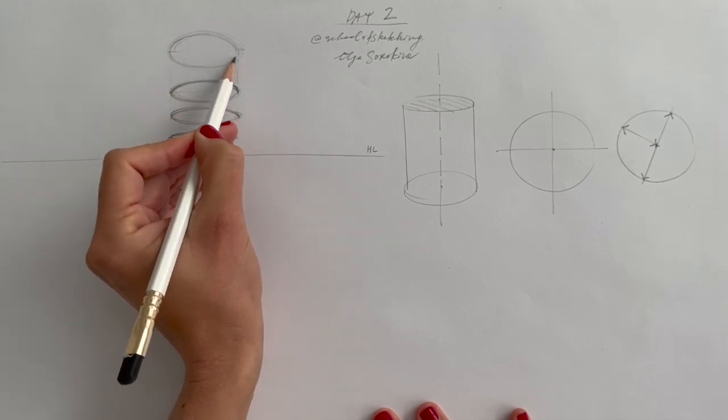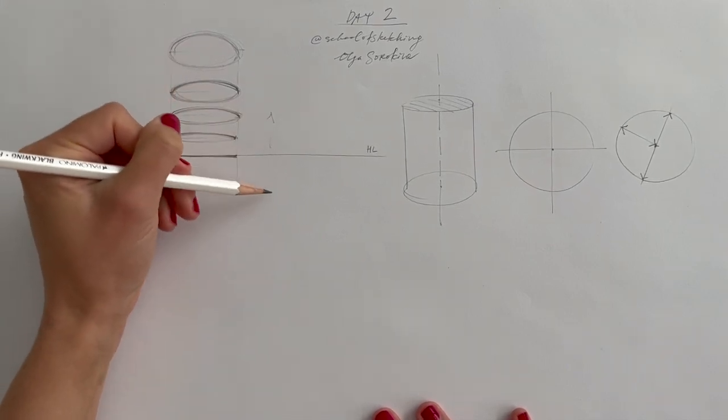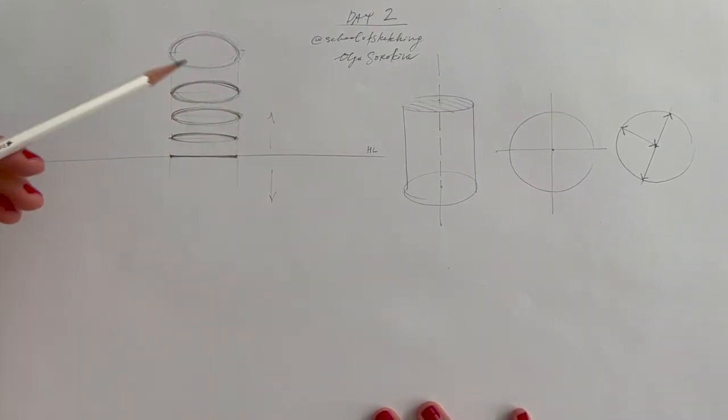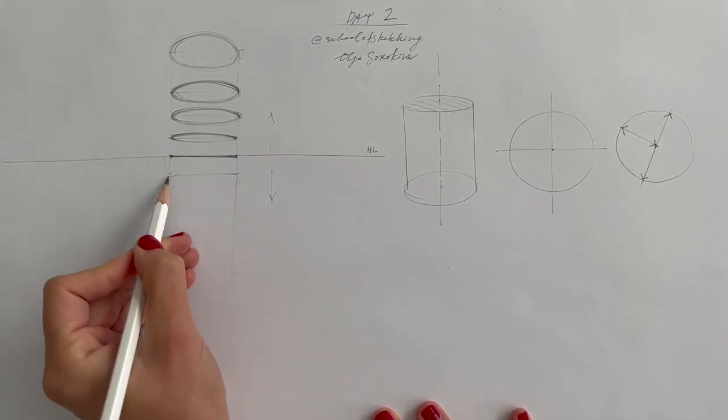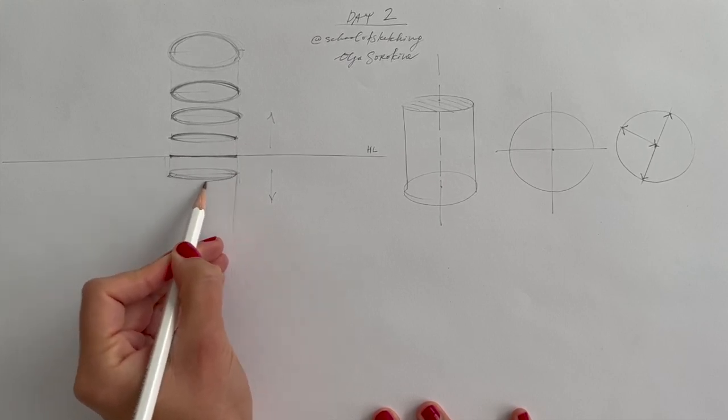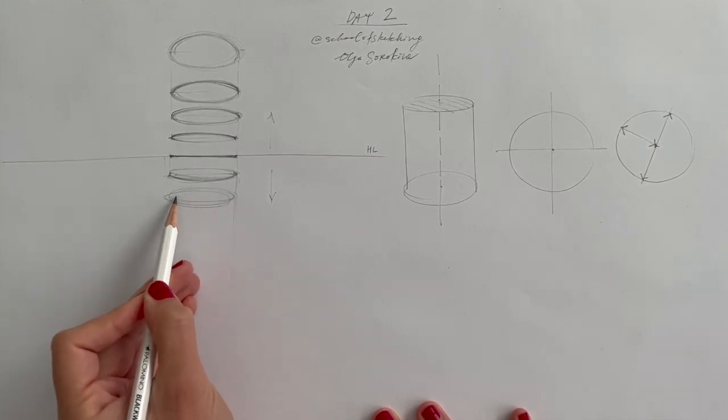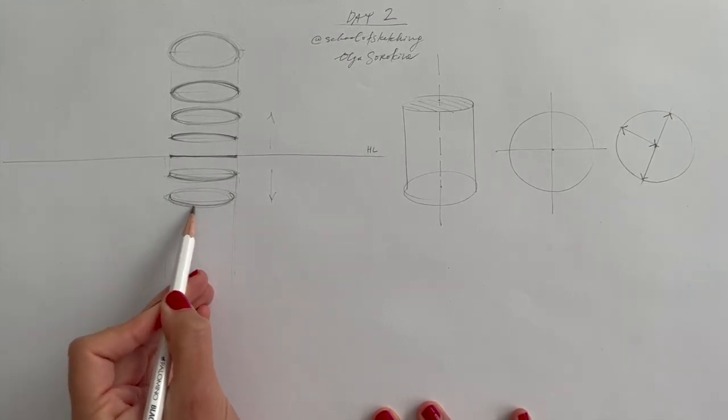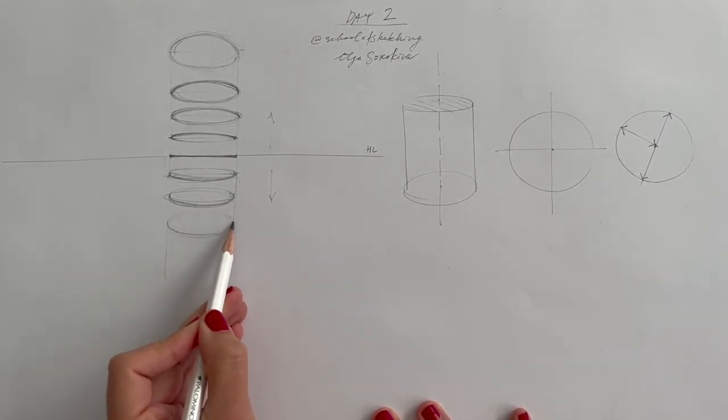So imagine that the horizon line is just a big, huge plane. It's like a huge piece of paper that's horizontal and parallel to the earth. And our circle is also parallel to the horizon line. So it's not rotating. It's not inclined. It's just parallel. But because of its movement, up or down, the further it away from the horizon line, the more we will see it.